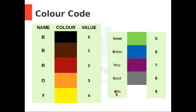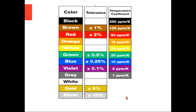This table shows the color code along with its numeric values. And this table shows the tolerance level and temperature coefficient corresponding to the color code. Now we will use this data to solve some examples.